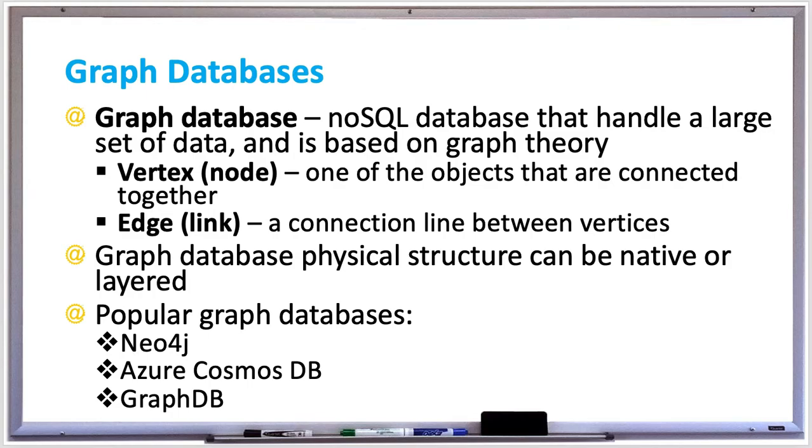Relational databases support SQL as the main query language, but NoSQL graph databases support many query languages such as Cypher, Gremlin, and Sparkle.